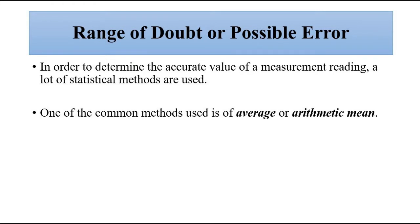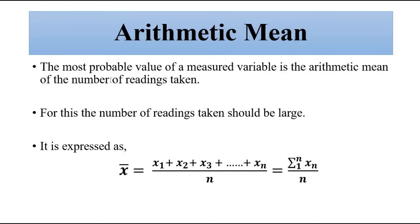Here arithmetic mean or average comes into play, where the most probable value of the parameter which we are trying to measure is simply the average of the number of readings which is taken. Suppose we have taken n readings, n measurements of a particular reading, then what we do is simply we take the average of that.